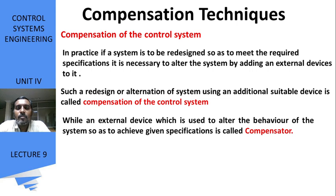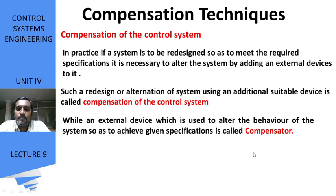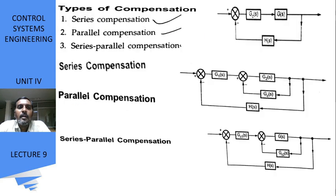We are adding or altering components to the present system in order to meet the next level requirements — that is compensation of a control system. An external device used to alter the behavior of the system so as to achieve given specifications is called a compensator. There are three types of compensators: series compensator, parallel compensator, and series-parallel compensator.